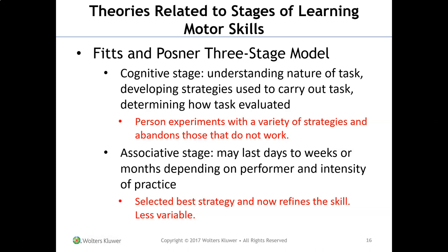The first stage is called the cognitive stage — you're understanding the nature of the task. Let's say it's walking. You understand the nature of the task, you develop strategies to carry it out, and you determine how the task is evaluated. At this stage, the person experiments with a variety of strategies to get from point A to point B, and abandons those that do not work.